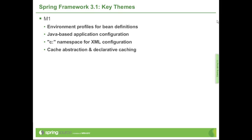There's also a minor but really nice feature: the C namespace — the constructor namespace for XML configuration. You'll see what it looks like in a minute. It's a nice completion of the XML configuration model. And finally, there is a new functional area largely new for the Spring core: the cache abstraction and support for declarative caching. We'll spend quite a bit of time showing examples of this new domain for Spring.